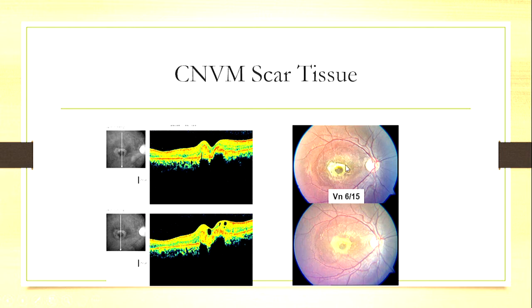This is a patient with scar tissue. You can see the scar here as a hypertrophied layer, and you can see the foveal contour is still there. This patient's vision was 6/12 following treatment — sometimes you can be lucky. Because his fovea is spared, even though the scar is all over.